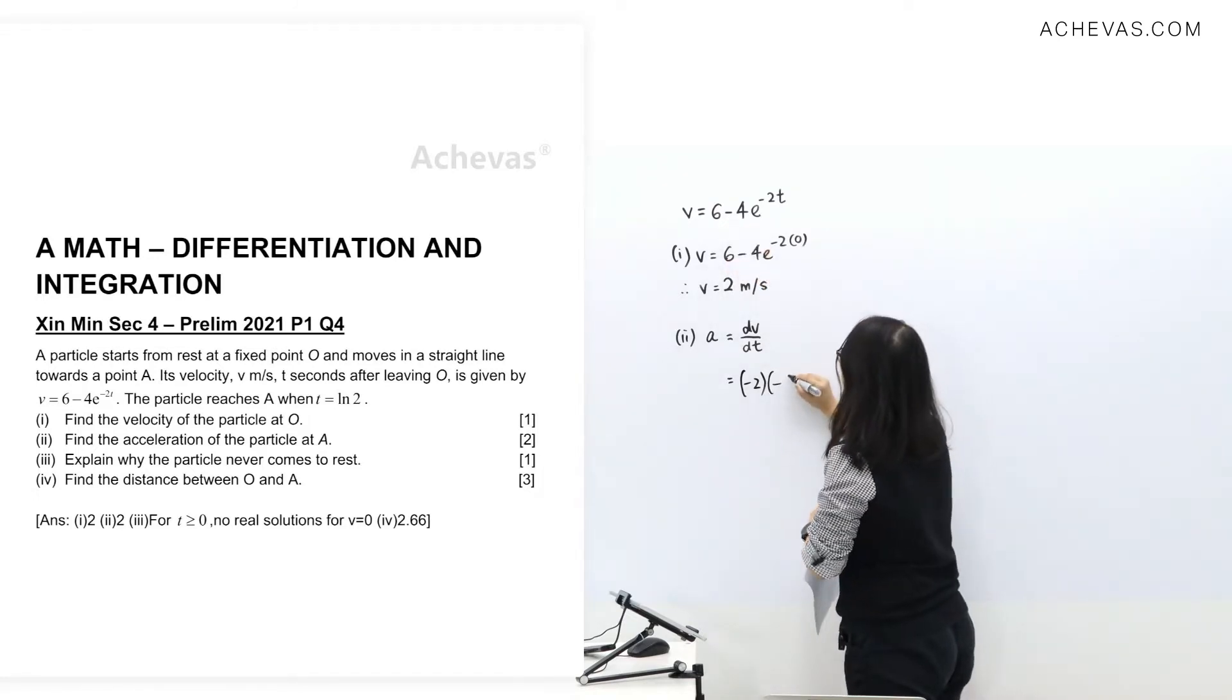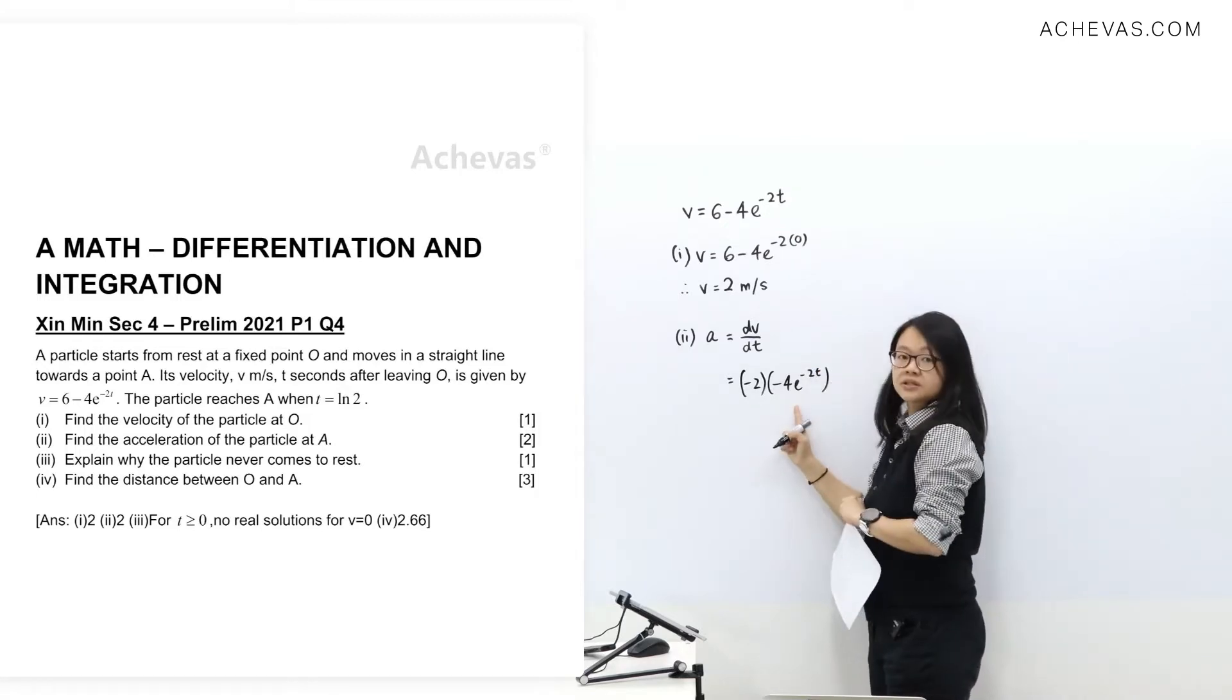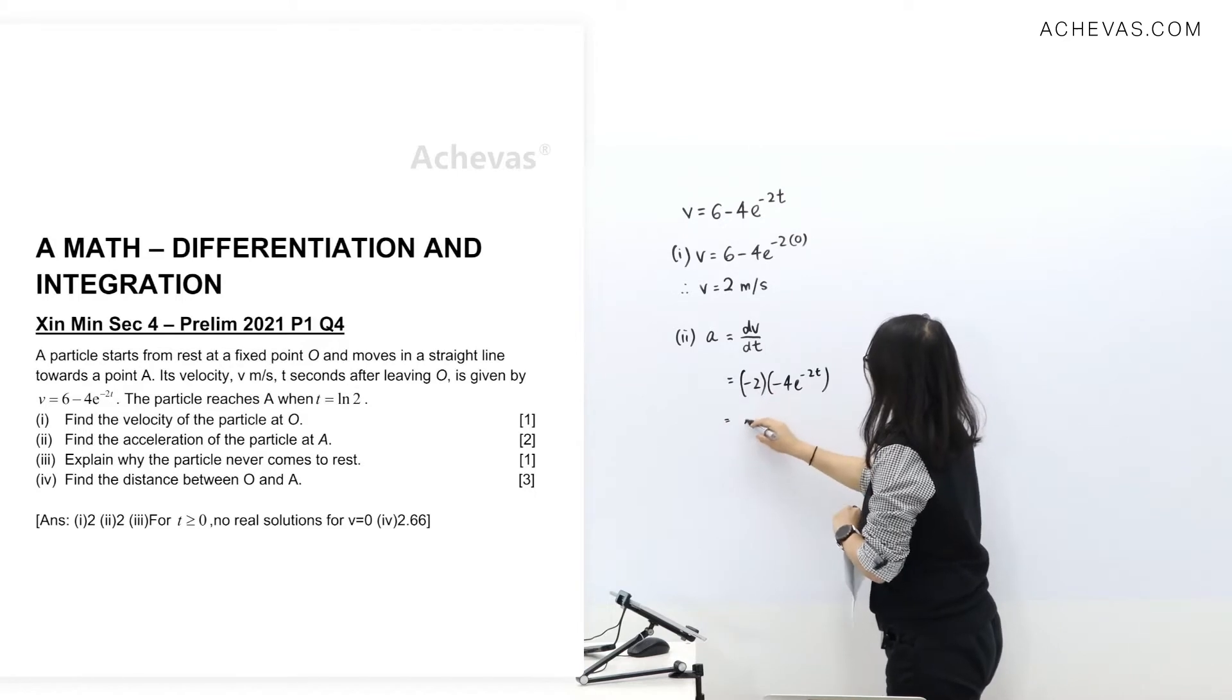If you can see, you can multiply it straight away. So it looks like this. Multiplying negative 2 and negative 4, we have 8E negative 2T.